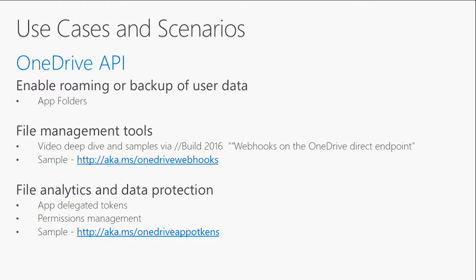Then there are file management tools — applications that need access to a set of files in a user's OneDrive in order to enable more robust file access capabilities or value-add services on top of a user's files stored in OneDrive. To enable this, the relevant features the OneDrive API supports are sync changes and webhooks. You can find additional details on how to leverage webhooks in another Build 2016 video linked to this one.